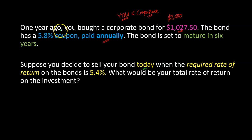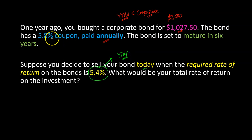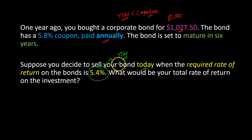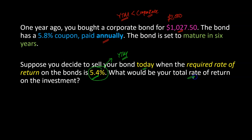Suppose you decide to sell your bond today, meaning you only held it for one year. Your required rate of return on the bond today — the yield to maturity that exists now — is 5.4%. We don't know what it was last year when you bought it, but today it is 5.4%. We need to figure out the price at which you'll be selling the bond, which we can calculate from this yield to maturity. The question is: what is your total rate of return on the investment?